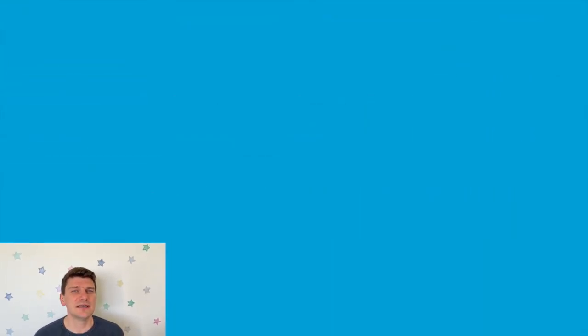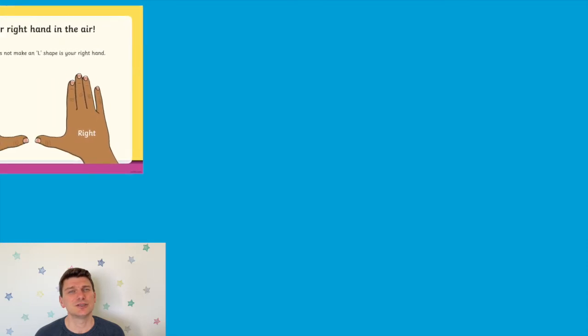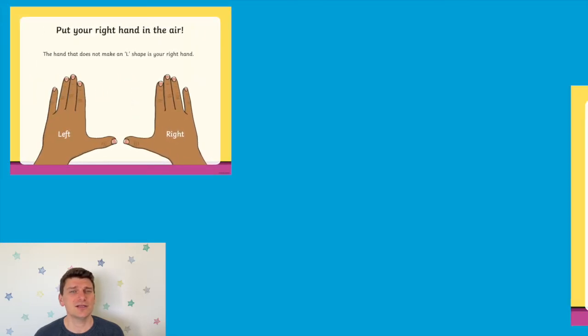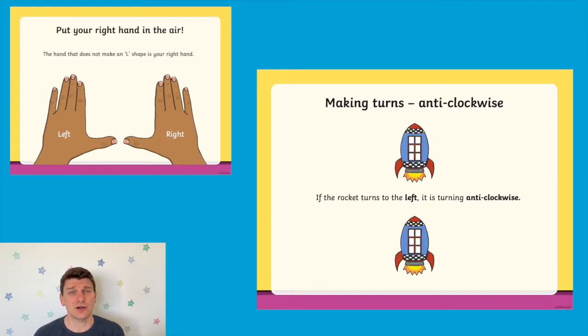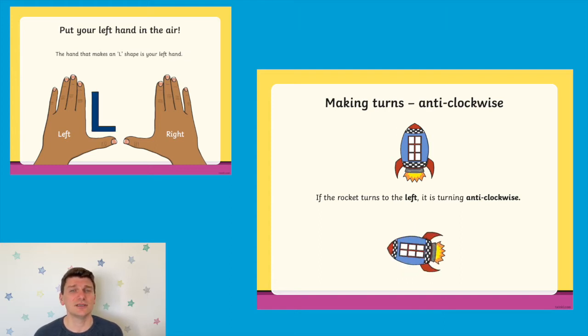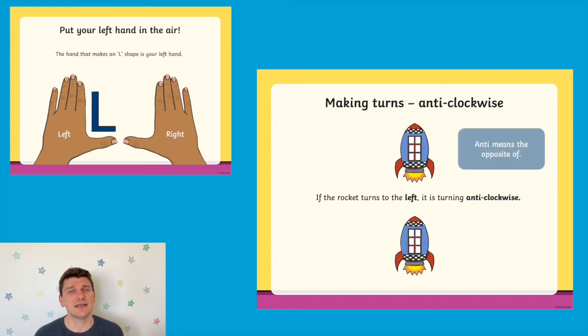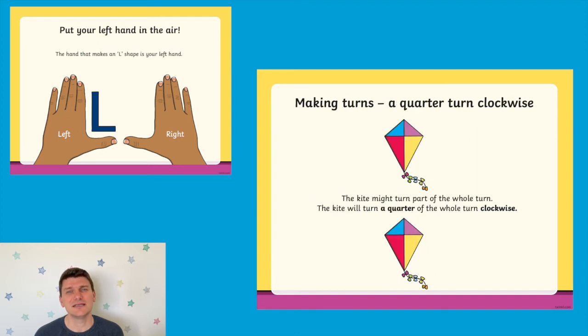When teaching children about position and direction, it's really important to build a strong foundation of positional language. Words like clockwise and anti-clockwise could seem a little daunting for young learners, so it's really important to make the vocabulary as clear and as easy to follow as possible.